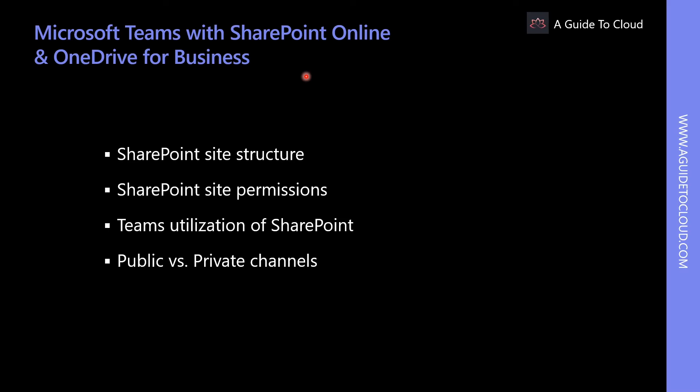One of the core features of Microsoft Teams is the collaboration service it provides through SharePoint Online and OneDrive for Business. When a new team is created, a new SharePoint site is provisioned, including sub-sites for your public channels created in Teams. If a team is added to an existing Microsoft 365 group, the public channels are added to an existing SharePoint site as well. Files shared in public channels are automatically added to the document library, and permissions and file security options set in SharePoint Online are automatically reflected within Teams as well.